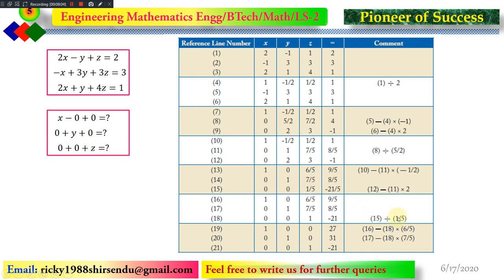I make the pivot 1/5 equal to 1 by dividing the entire equation by 1/5. Since it contains a single element, 1/5 ÷ 1/5 = 1, and -21/5 ÷ 1/5 = -21. Now I must make the remaining two non-zero elements 0. Equation 18 contains the pivoting element, so I multiply by 6/5 and 7/5 respectively, making the other elements 0. The result is a diagonal of all 1s, giving x = 27, y = 31, z = -21.